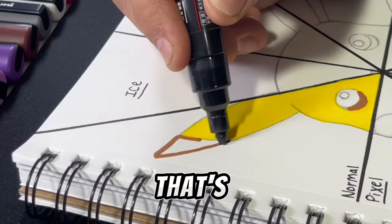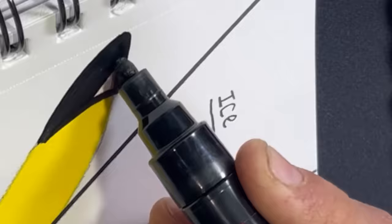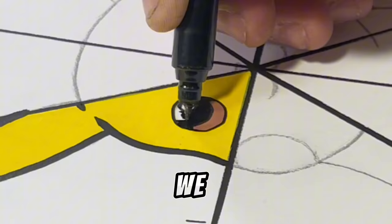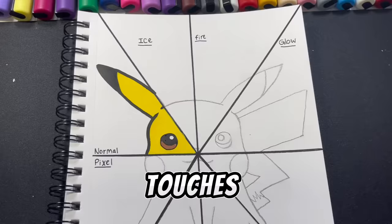Wait a second, that's not supposed to be brown. Don't mind me just messing it up already. All right, we're almost done outlining. We are doing the finishing touches. How does the normal Pikachu look?